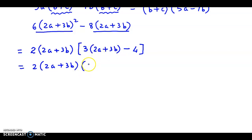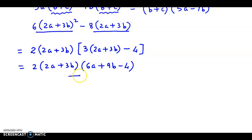Let us simplify this. Now, 3 into 2a plus 3b: 3 times 2 becomes 6a, 3 times 3 is 9b, minus 4. So, this is the final answer.